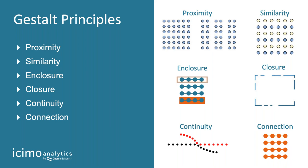Connection: when we connect things, our brain processes that the dots are moving from left to right. If I had connected those dots top to bottom, our brains would have perceived them as moving top to bottom instead.